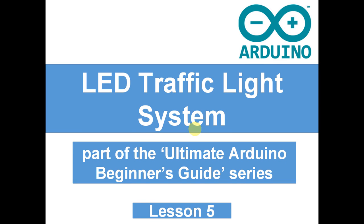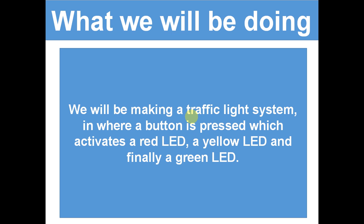Hello guys, welcome to the fifth Arduino tutorial. Today we are looking at an LED traffic light system. What we're going to be doing is making a traffic light system where a button is pressed which activates a red LED, then a yellow LED, and finally a green one.